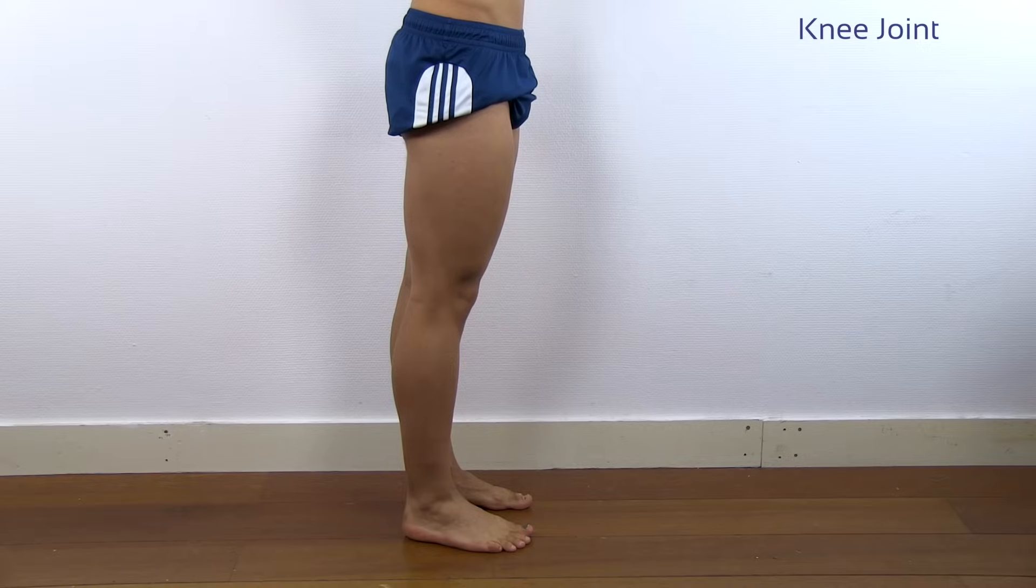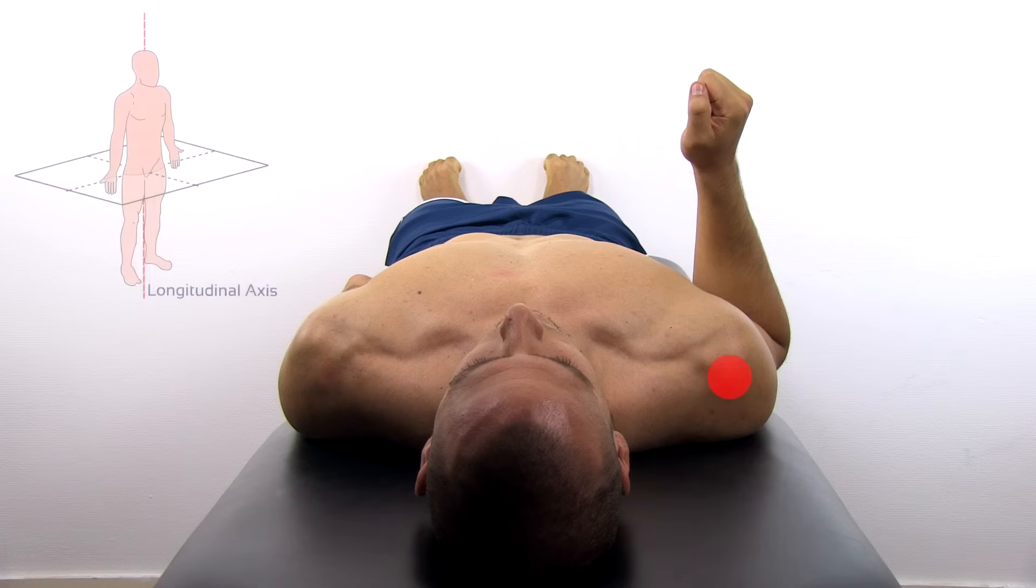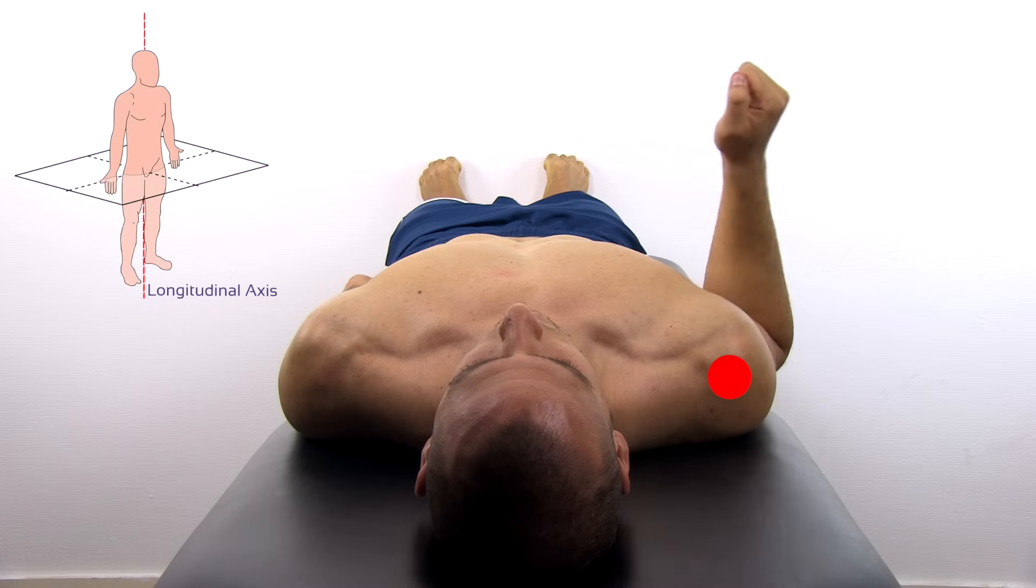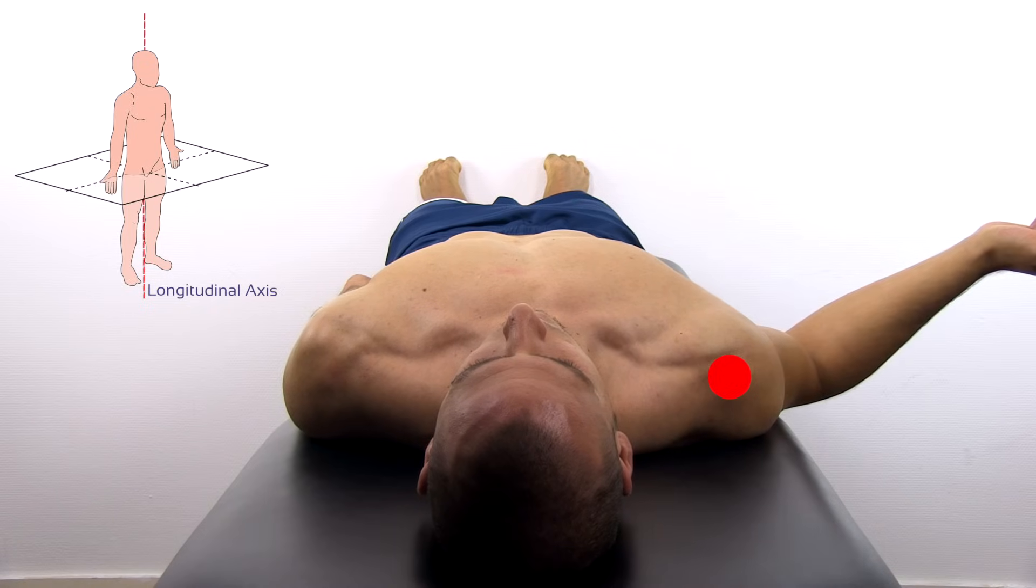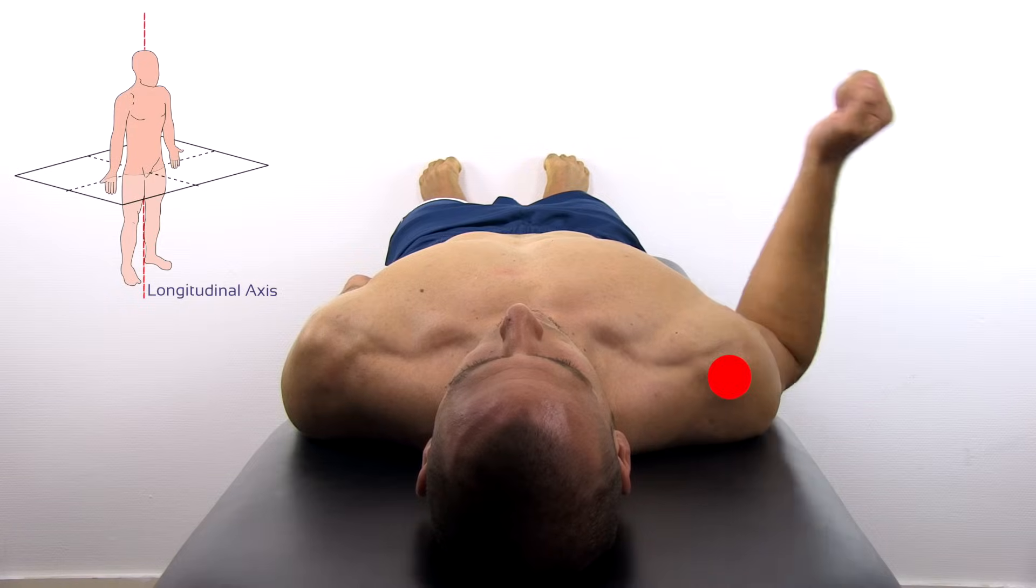The movements of the shoulder in the transversal plane around the longitudinal axis are called external or lateral rotation and internal or medial rotation.